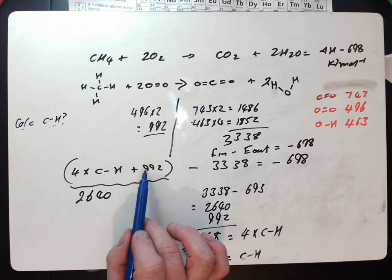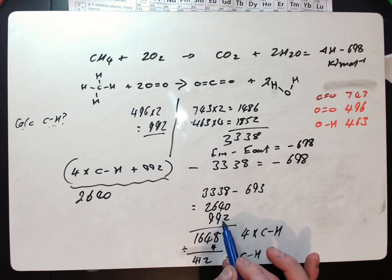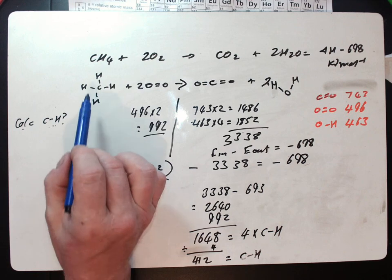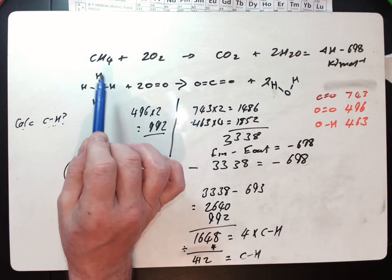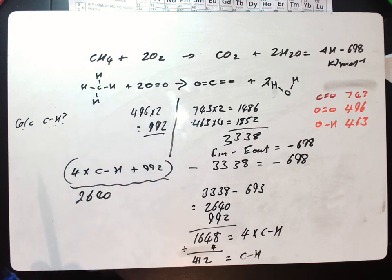But remember that within the 2640 is the 992. So we take the 992 out of the 2640 and we get 1648 is the energy contribution when I break the bonds within that. But remember there's four carbon-hydrogen bonds in there. So four carbon-hydrogen bonds equal 1648 kilojoules. We divide that by four and we get the bond enthalpy of one carbon-hydrogen bond is therefore equal to 412 kilojoules.